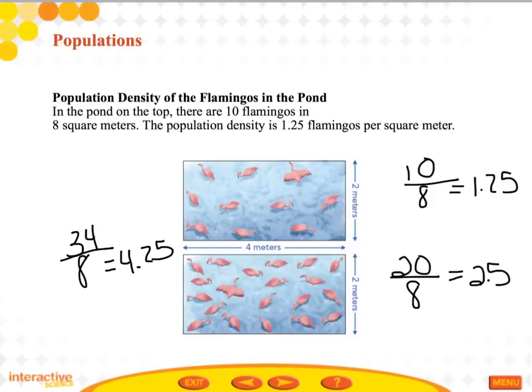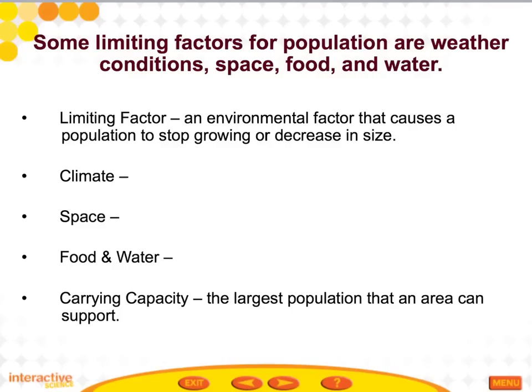If the population density of flamingos in the pond became too great, there wouldn't be enough food or space to survive and you would see population decrease. There are factors that limit population growth. A limiting factor is an environmental factor that causes a population to stop growing or decrease in size. Some limiting factors include weather conditions, space, food, and water.